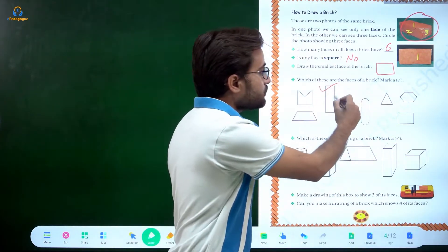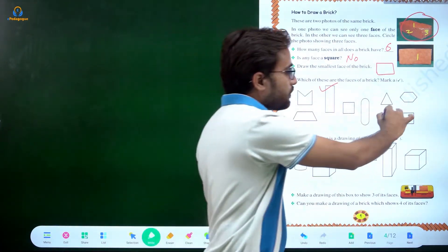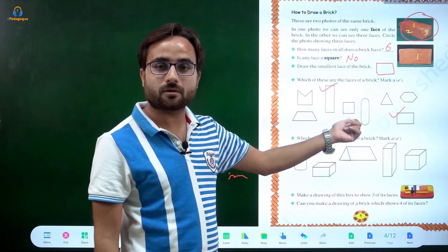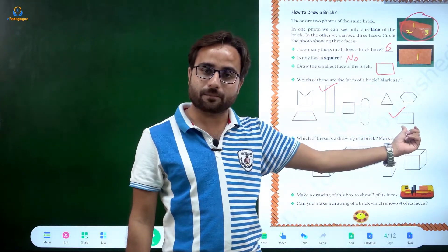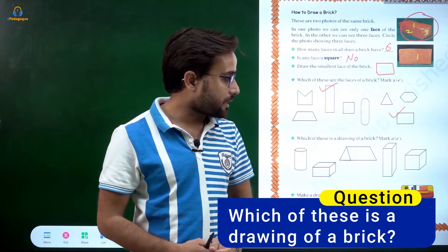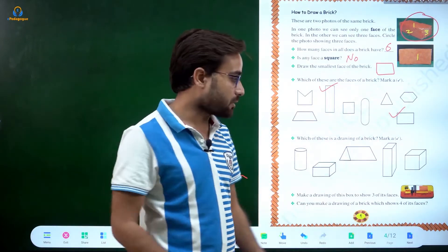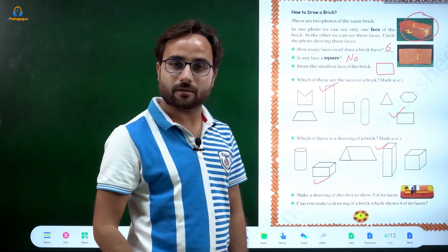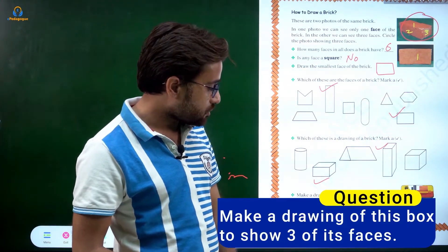Which of these are the faces of a brick? Clearly the first one mentioned is a face. The second one is the smallest face — but it is a square, so it is not possible. Bricks do not have square faces; the smallest face is rectangular. Now, which of these is a drawing of a brick? The ones where three faces are shown — these are the 3D designs. So this one and this one are possible bricks.